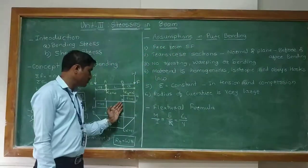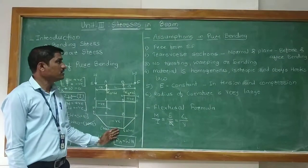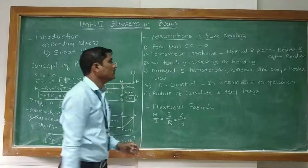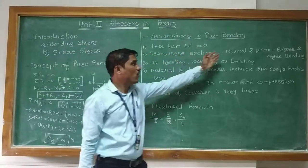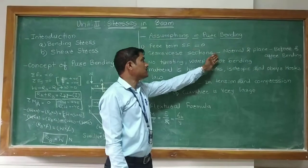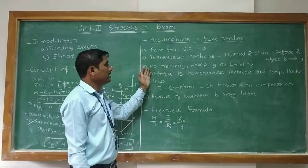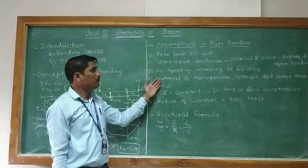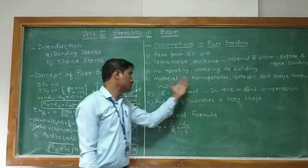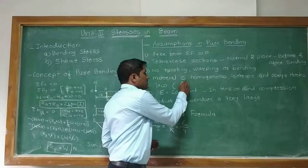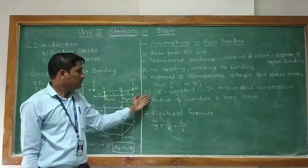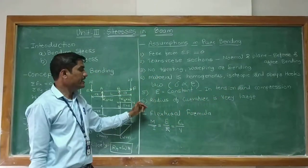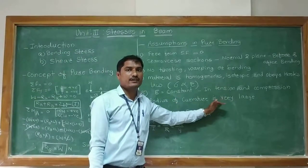When the shear force is zero, the bending moment is maximum. The transverse sections of the beam which are normal and plane before bending remain normal and plane after bending. There is no twisting or warping. The material should be homogeneous, isotropic, and must obey Hooke's law — stress is directly proportional to strain. The elastic modulus should be constant in both tension and compression, and the radius of curvature should be very large compared to the beam dimensions.